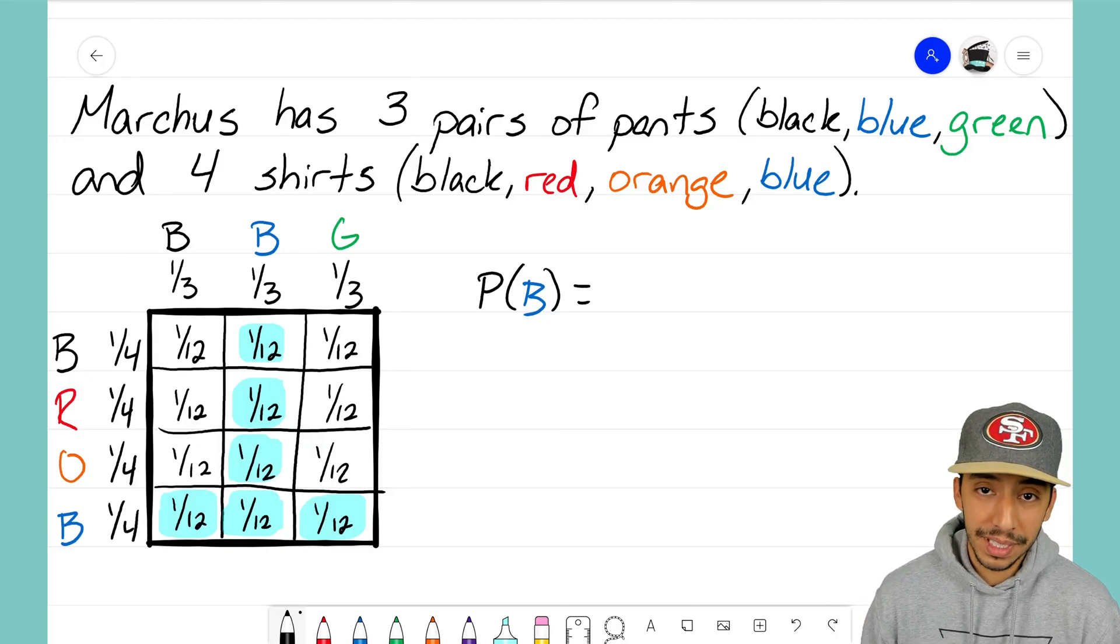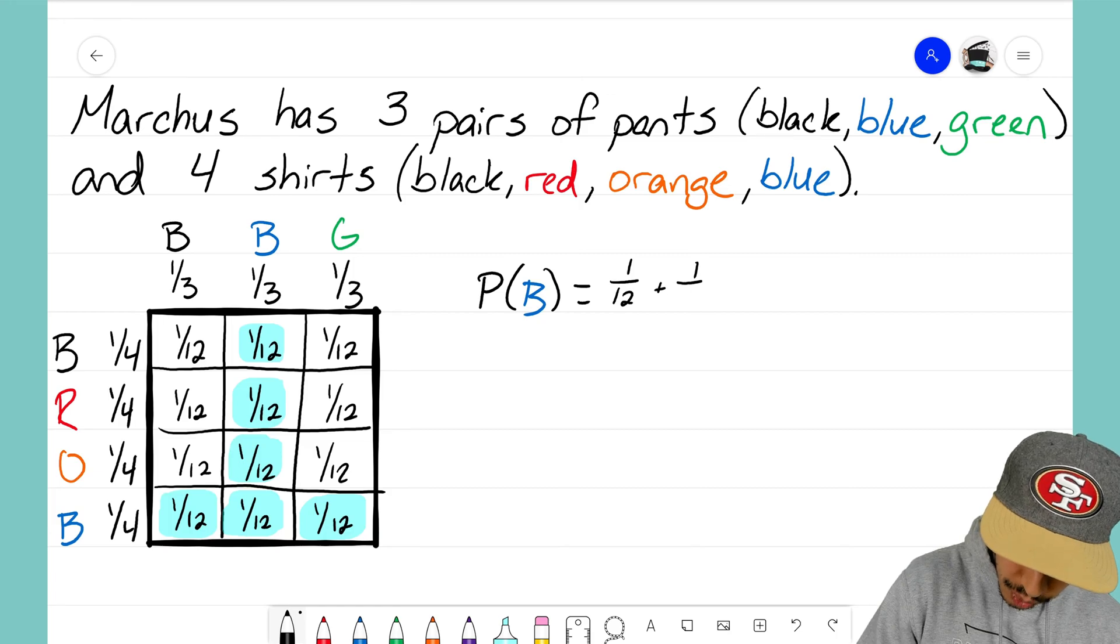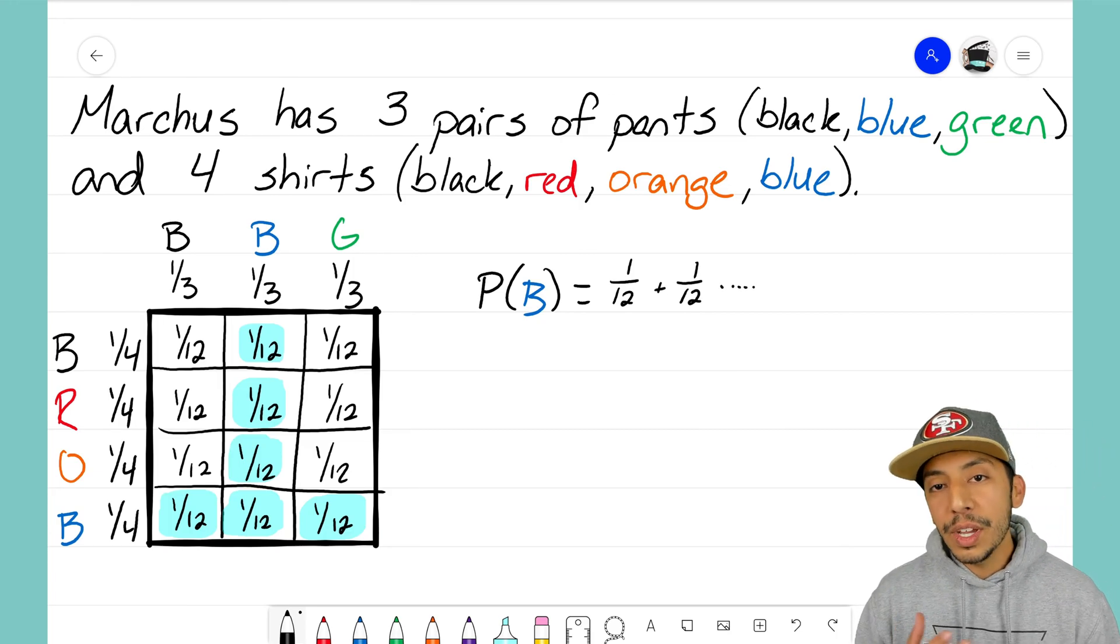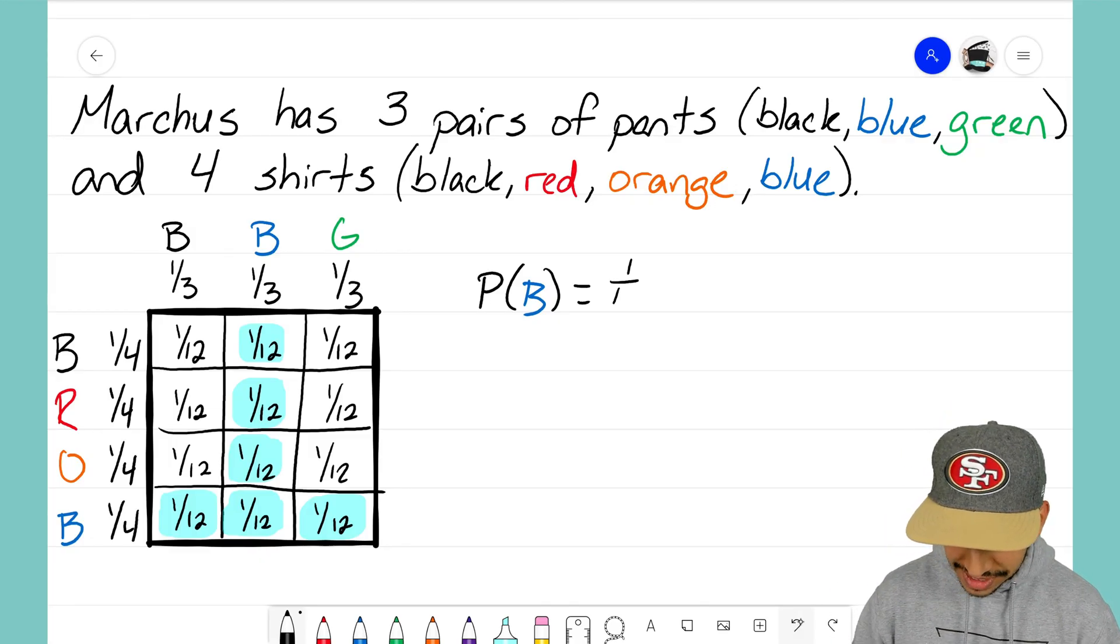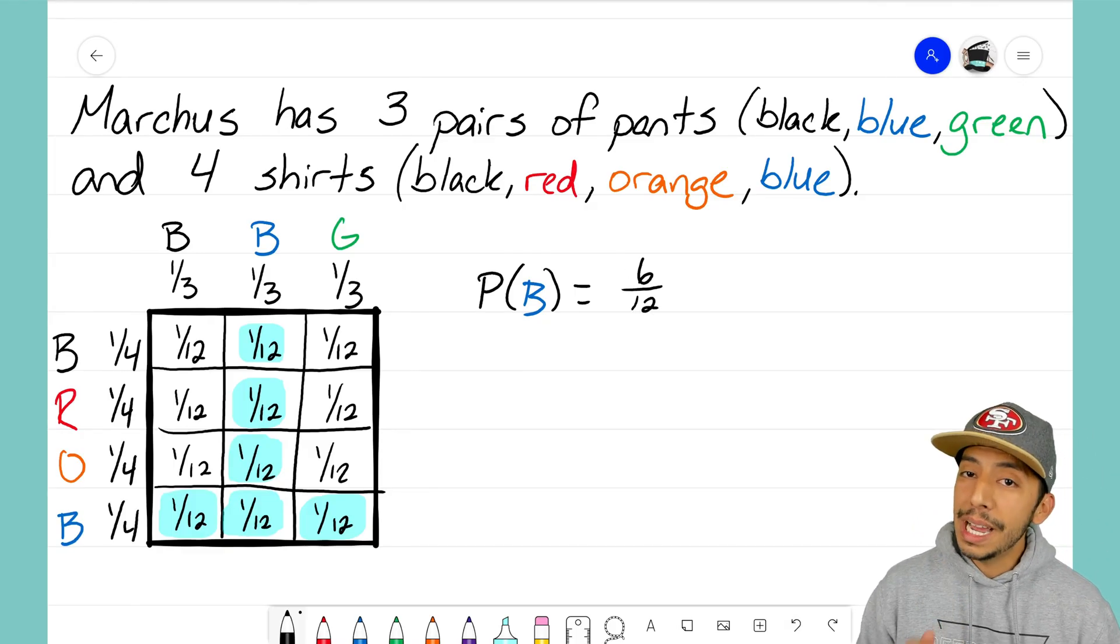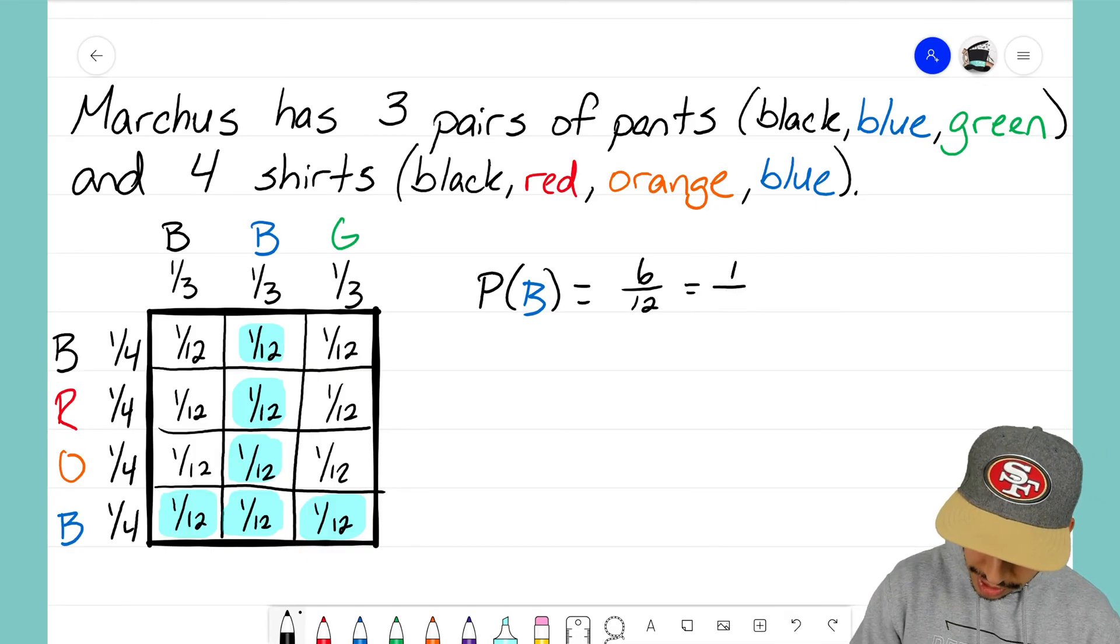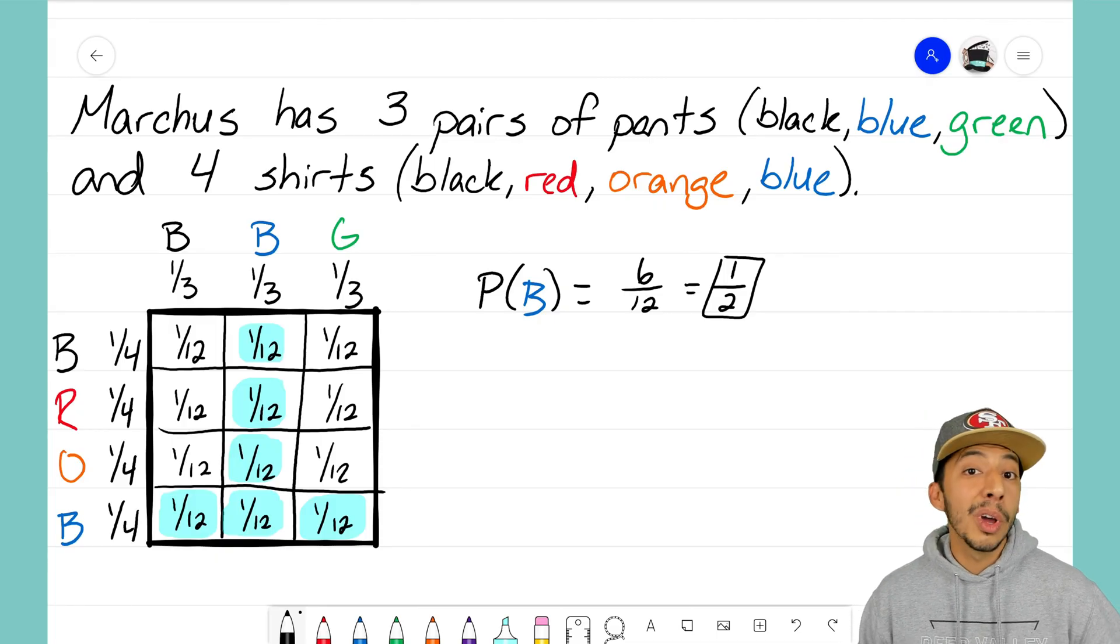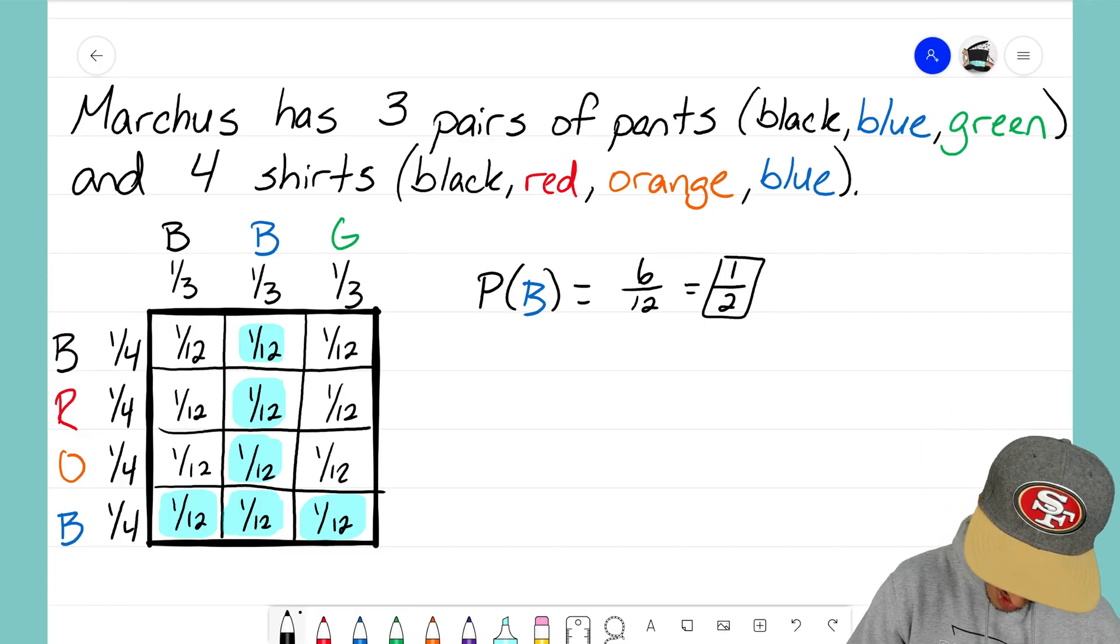Since we have six of those and they all happen to be one twelfth, I could write it out this way where I have one twelfth plus one twelfth, I would have to do this six times. But I think we can figure out that if I have six one twelfths, the answer for this is going to be six out of twelve, which happens to reduce to one half. So what's the chance of Marcus wearing blue? Well, he has a one in two chance of wearing something blue, or 50 percent.